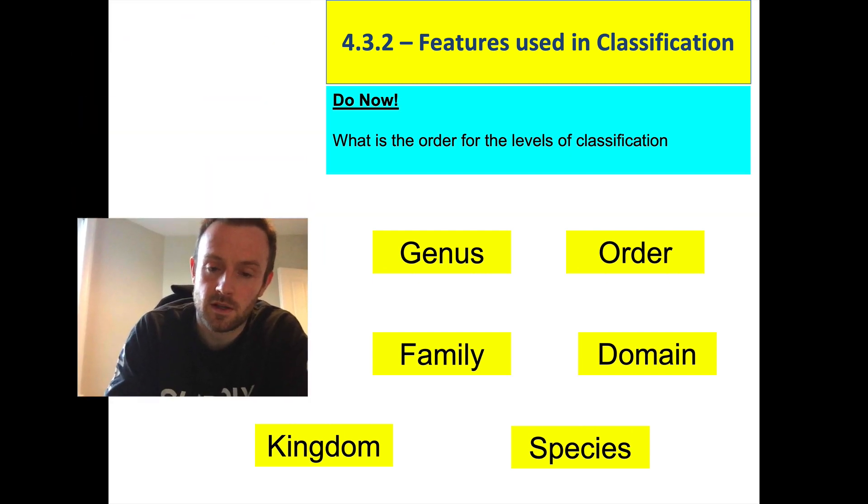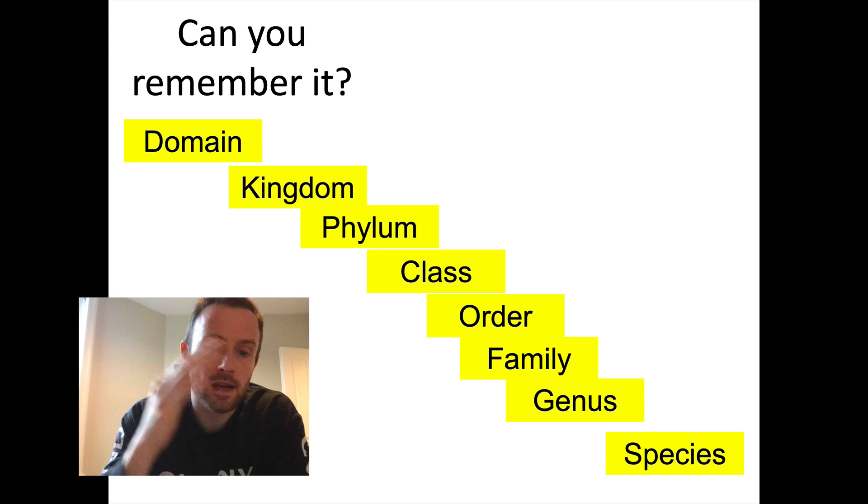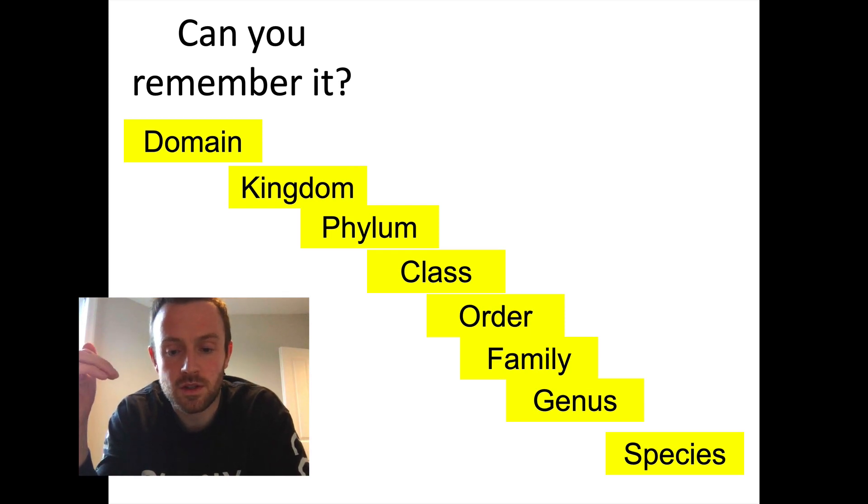Okay, here we go. Here's the answers. So we go from domain to kingdom, phylum, class, order, family, genus, and then species.